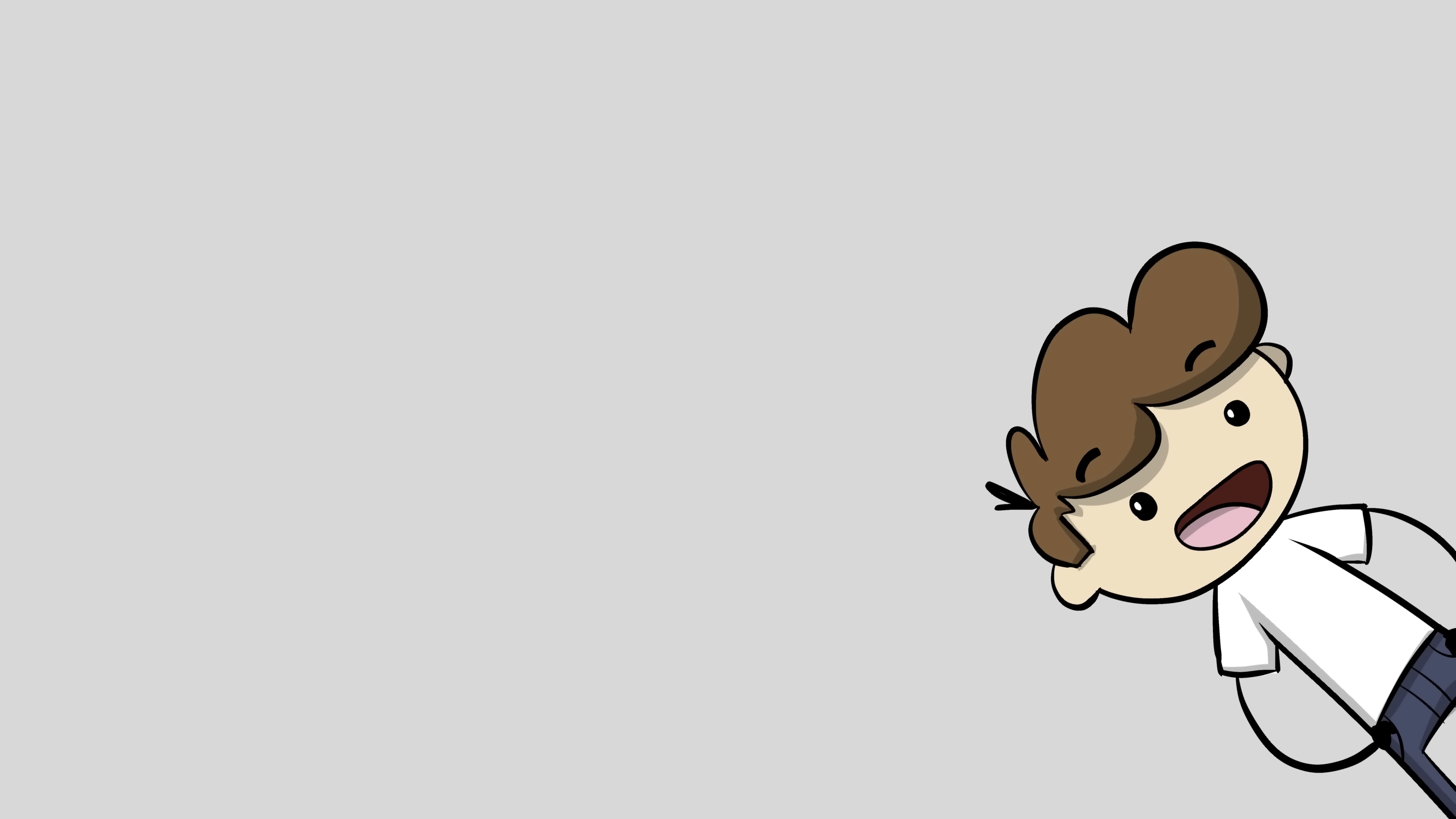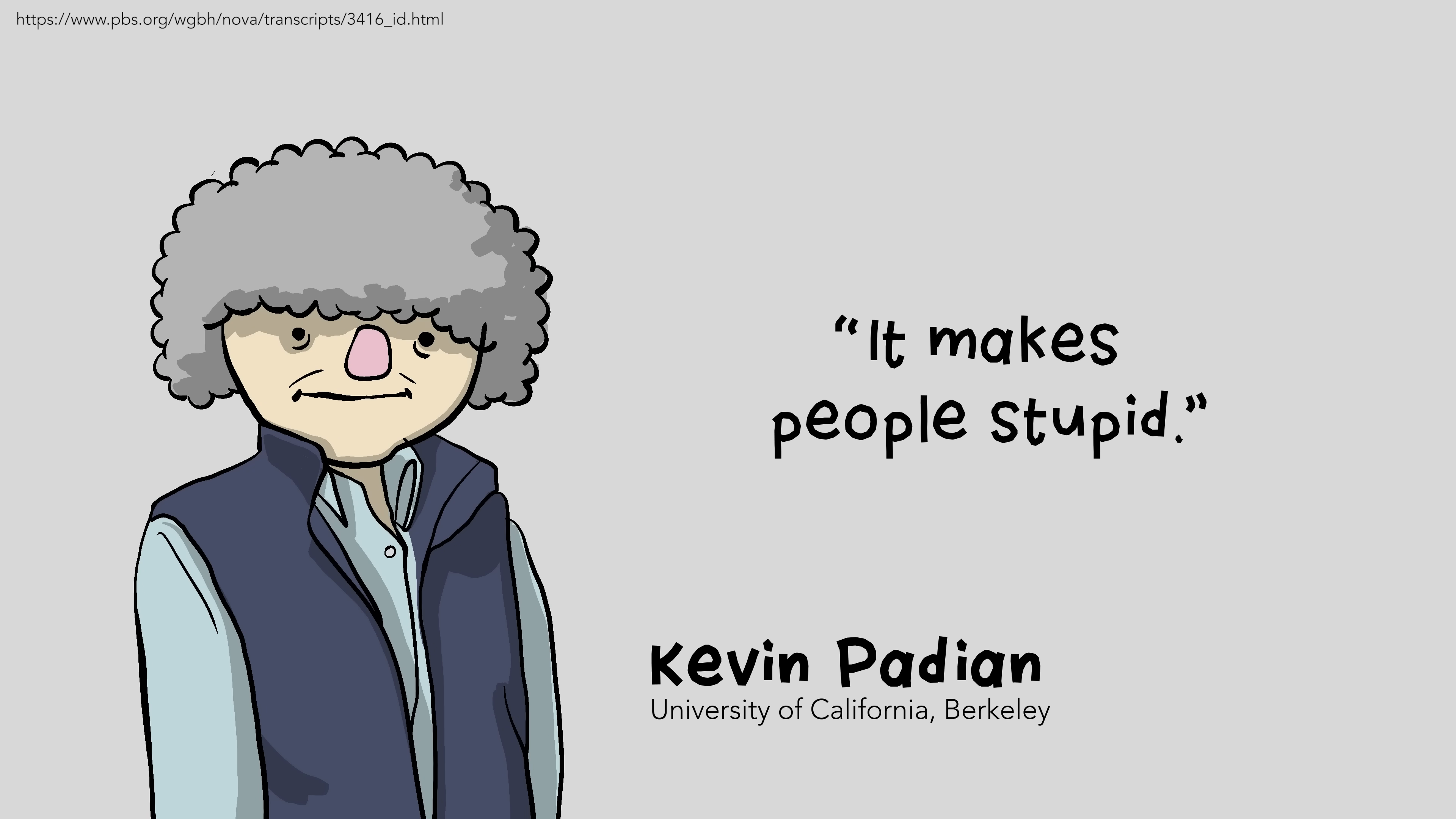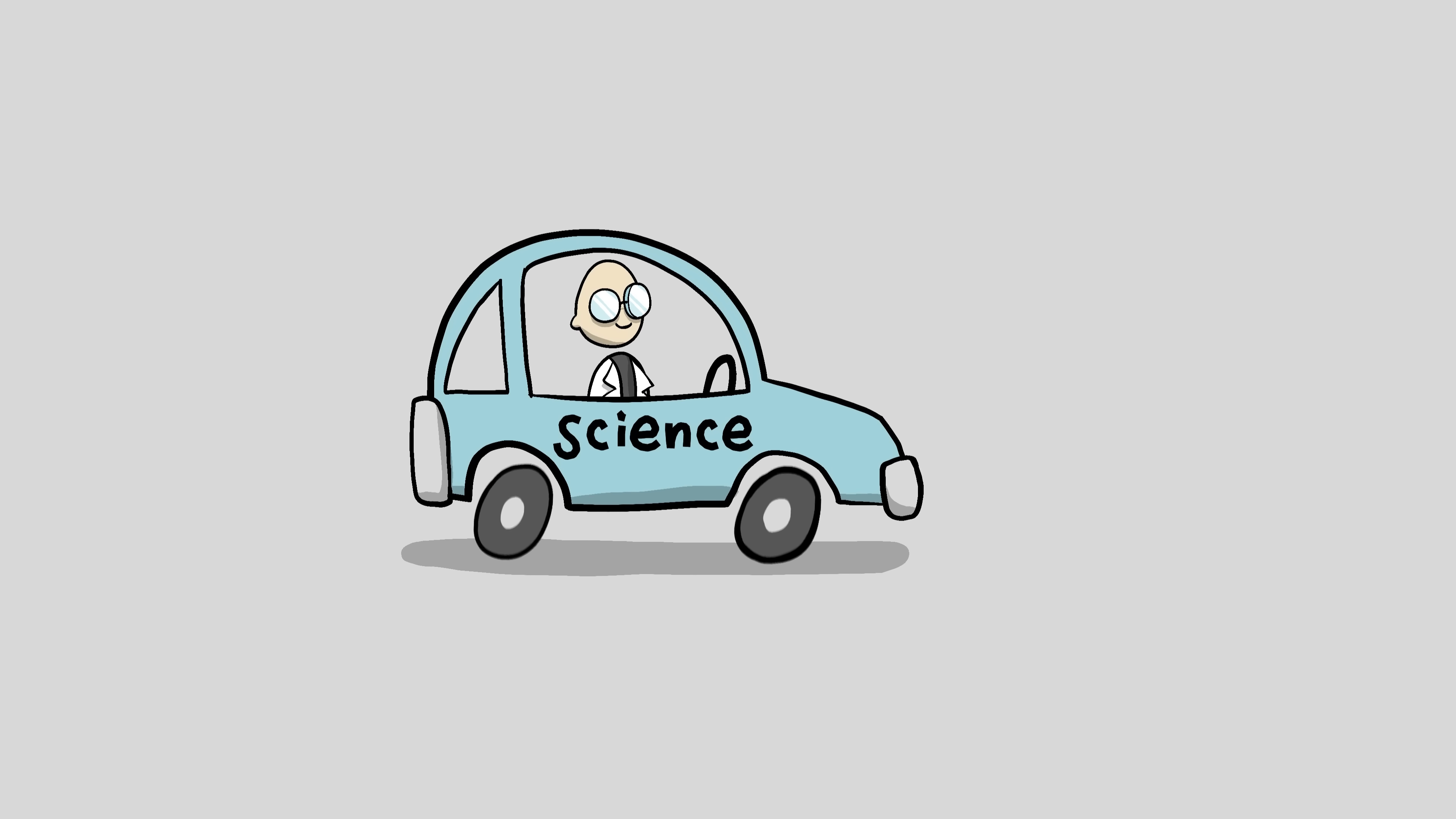Evolutionists like to talk about how intelligent design is anti-science. Ken Miller from Brown University once said that intelligent design is a science stopper. Kevin Padian from University of California, Berkeley, said that it makes people stupid. In other words, they believe that intelligent design is something like this.